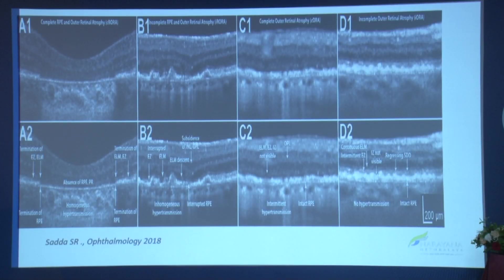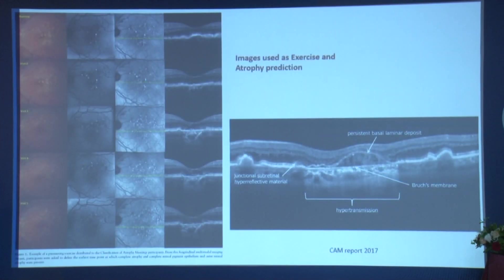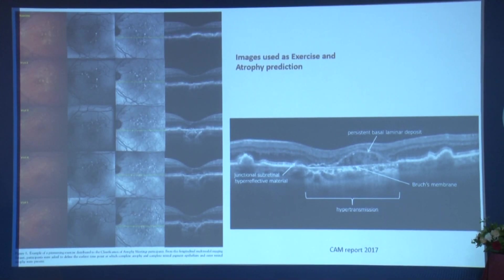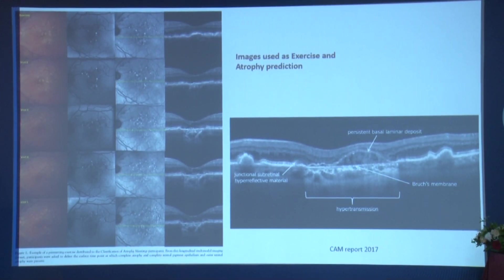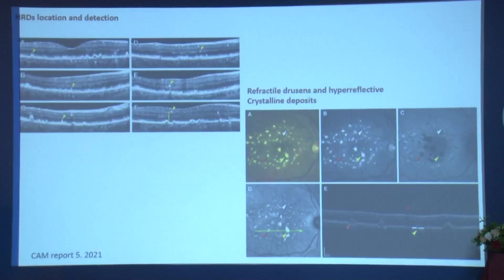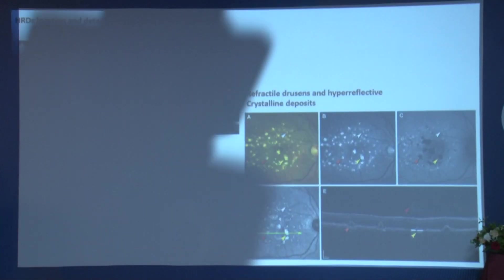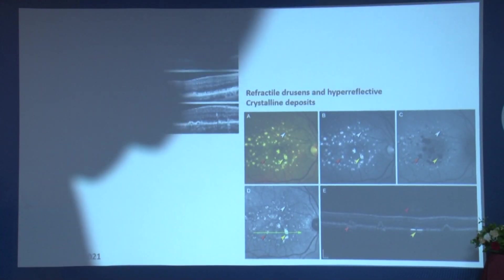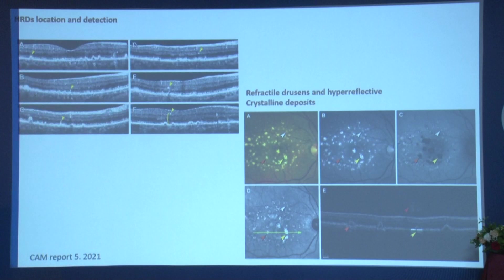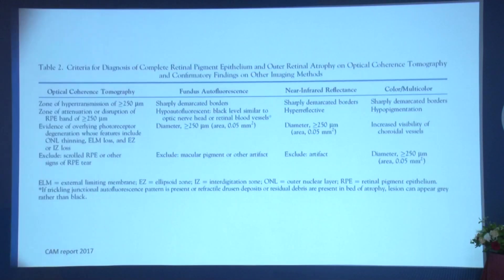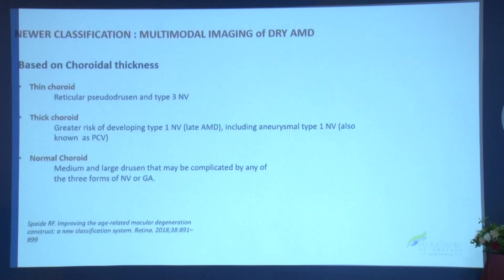The band of hyperfluorescence and RPE atrophy — complete and incomplete — is what discriminates QUORA from IORA. These images are used for exercise and atrophy prediction: what happens over time, where atrophy sets in, and HRD location. You can see refractile drusen and hyperreflective crystalline spots when comparing OCT B-scan with FAF, near infrared, and color multicolor images.